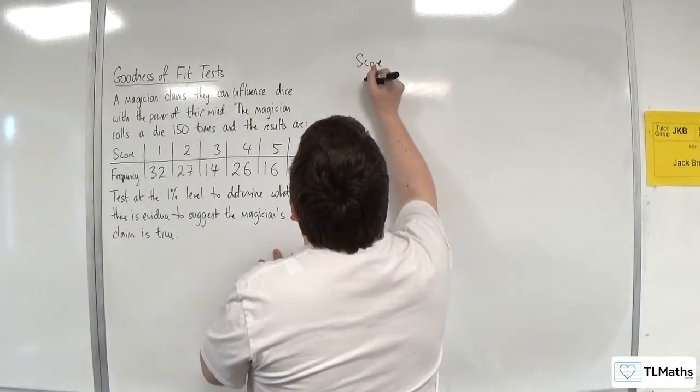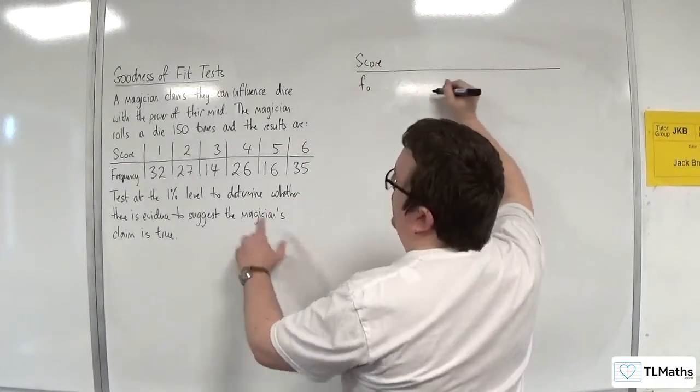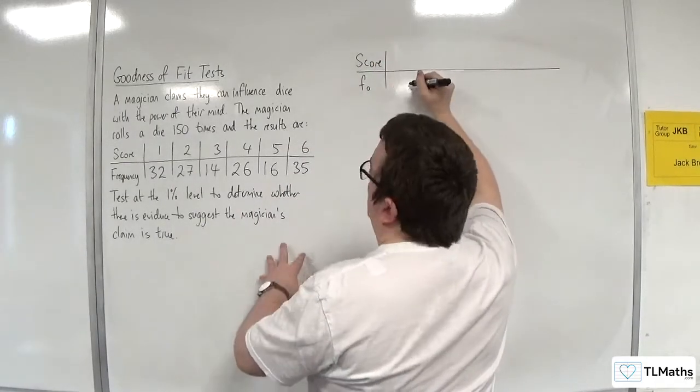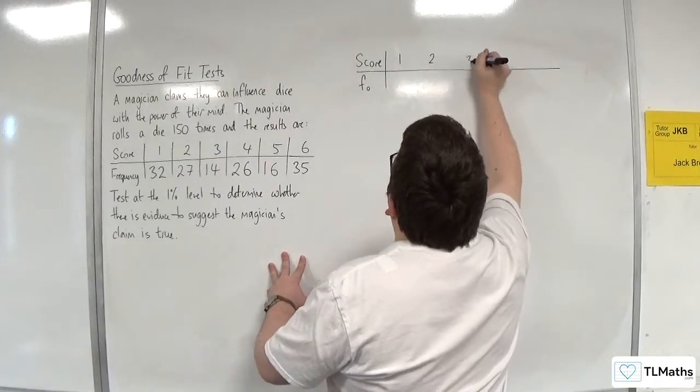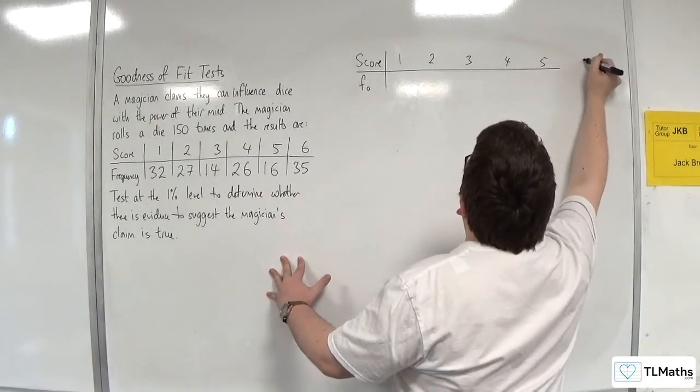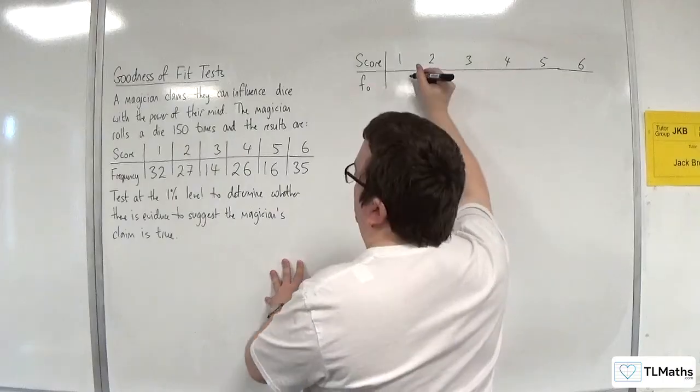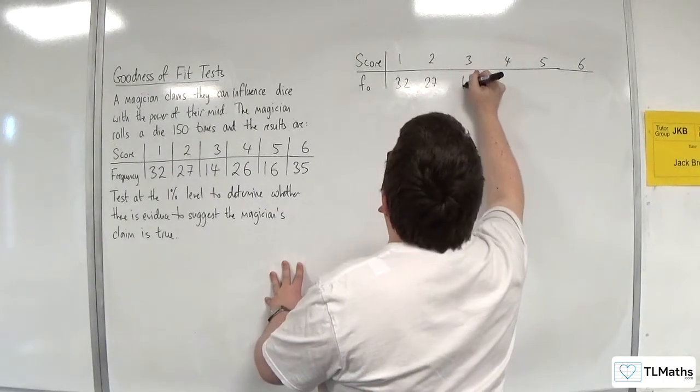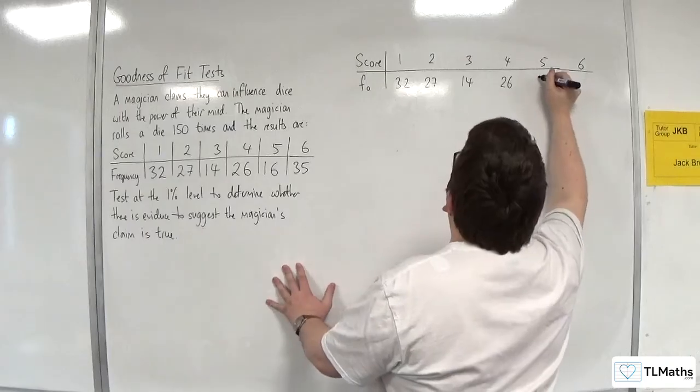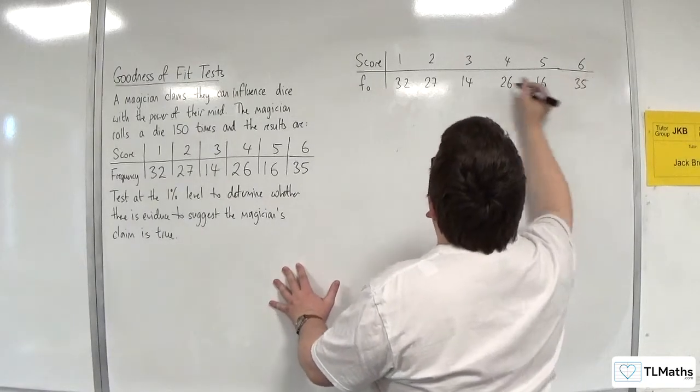So, 1, 2, 3, 4, 5, 6. And we've got 32, 27, 14, 26, 16, and 35. Okay.